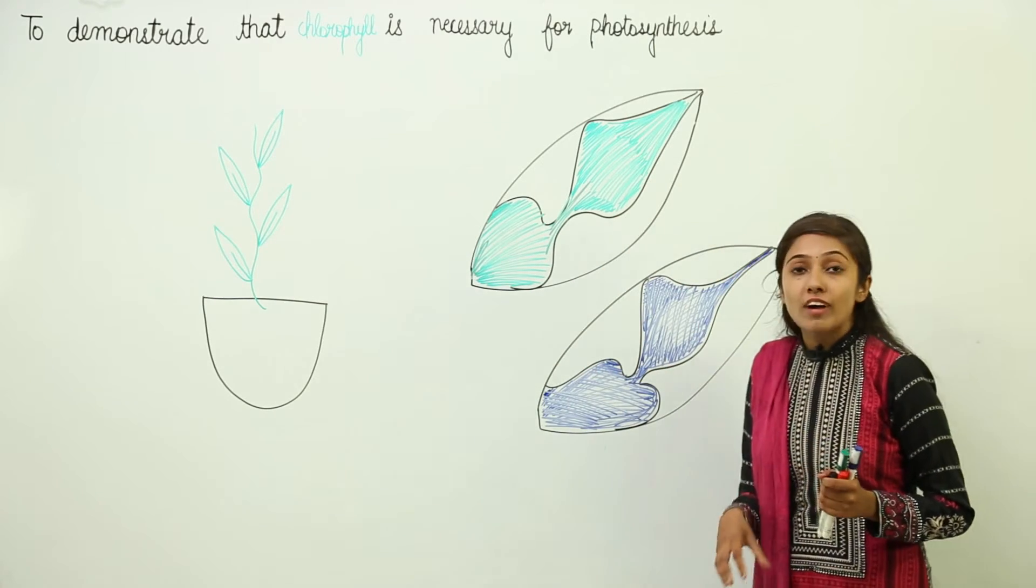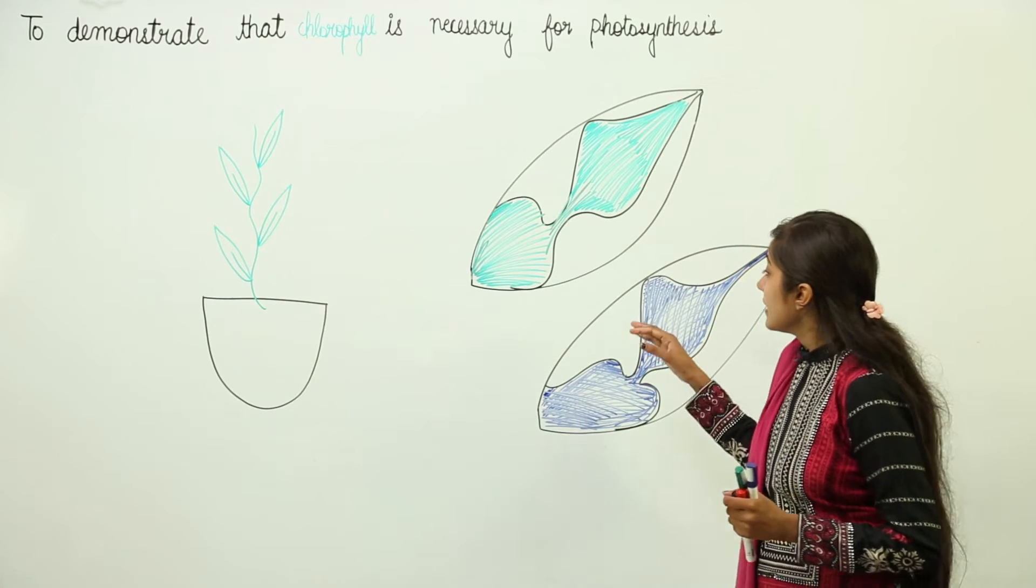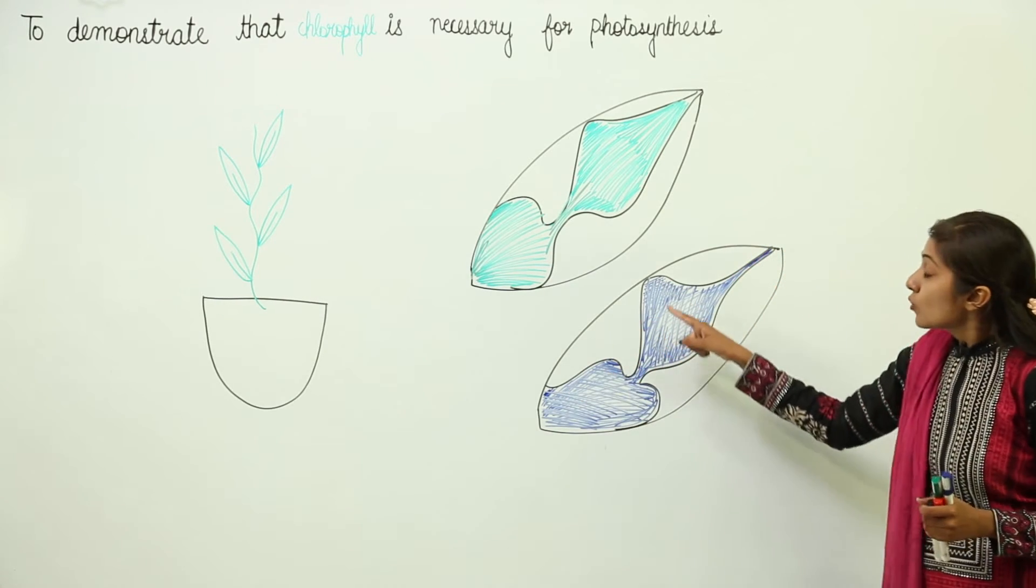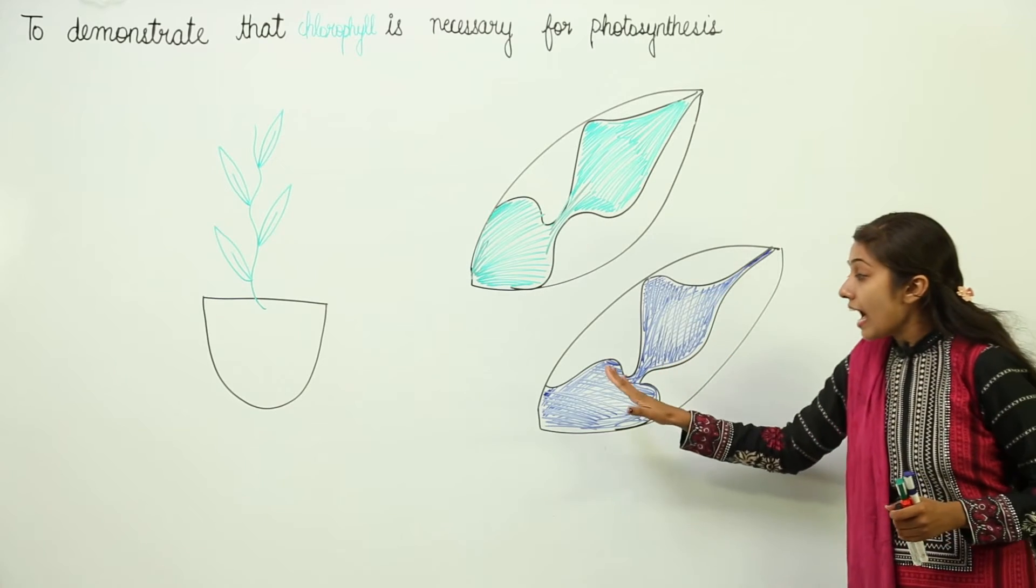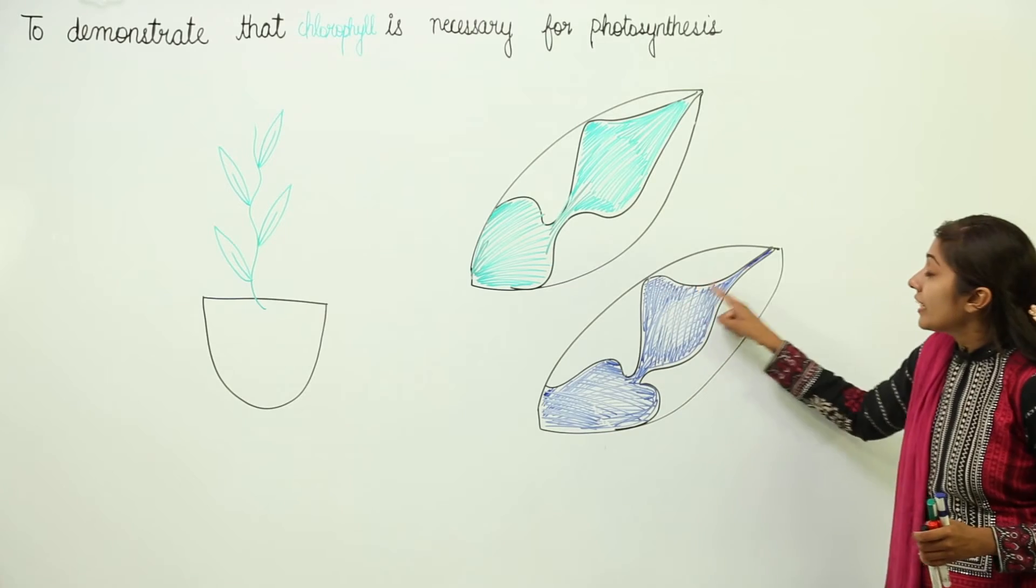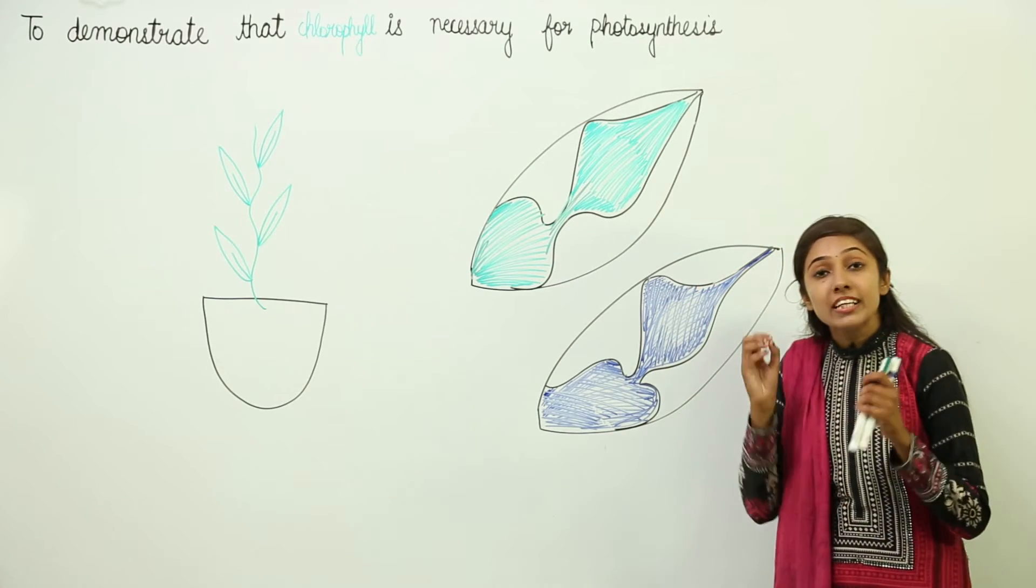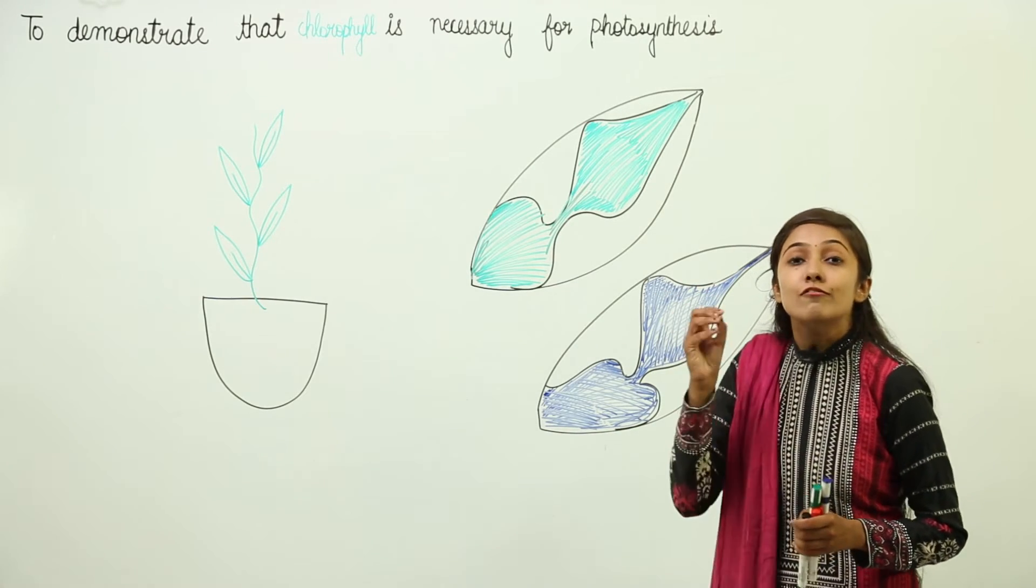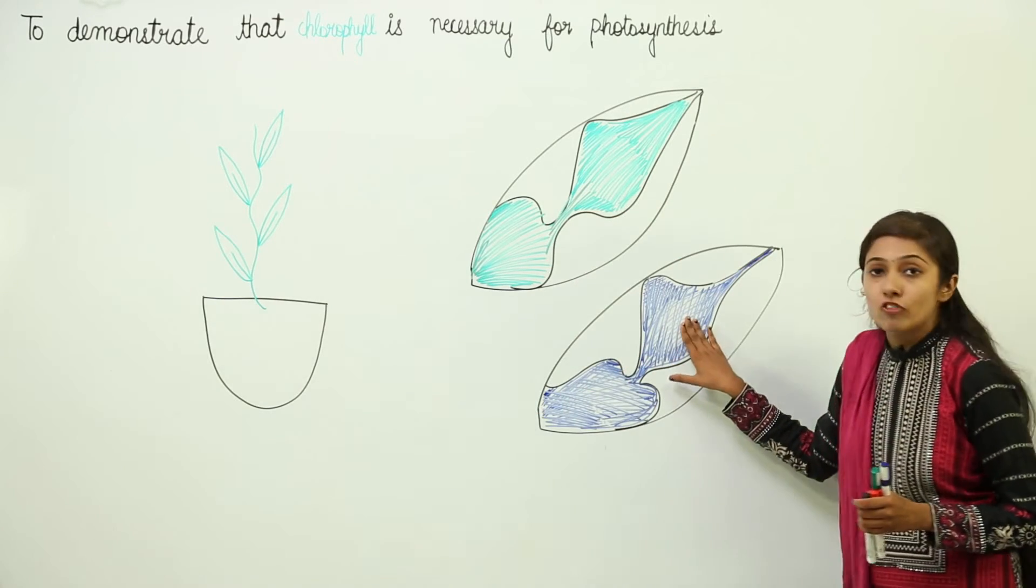We put iodine solution on it and see that the regions which were green in color show a positive starch test. This means these regions contained chlorophyll, and because of the presence of chlorophyll, photosynthesis has taken place and starch has been formed.